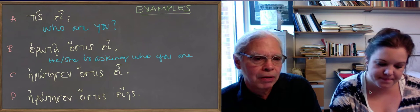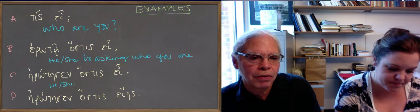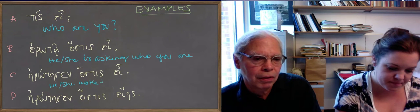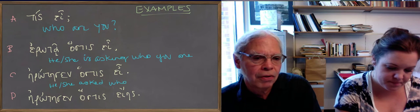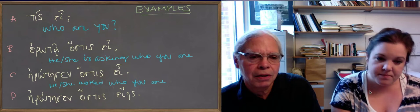If it's a past tense, you can do that again. You can say erotesen, that would be the aorist third person singular of erotao. He or she asked who you are. Keeping the verb ei in the indicative.